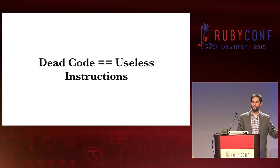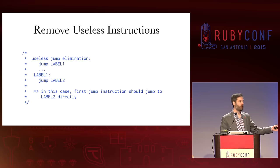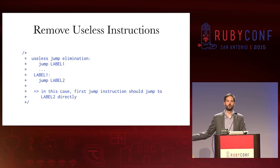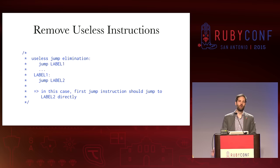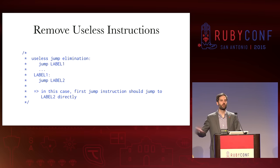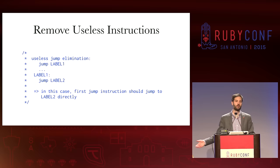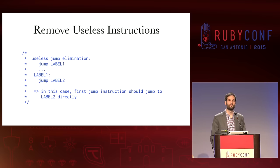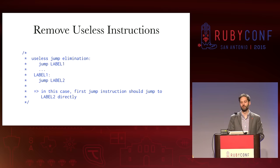Let's say we generate a bunch of instructions from walking the AST, and some of them happen to be useless — we can eliminate those. So let's say we generate a jump, it jumps to a label, and immediately after that label we do another jump. What's the point of jumping to label one when we can just jump directly to label two? This is the type of elimination that peephole optimizations do — they pull out instructions that are useless.